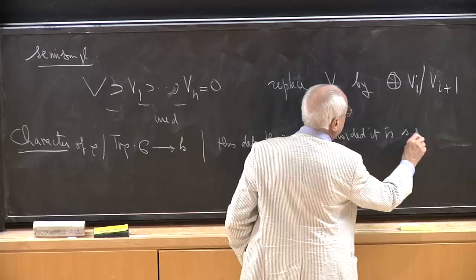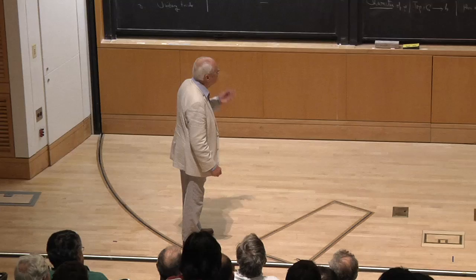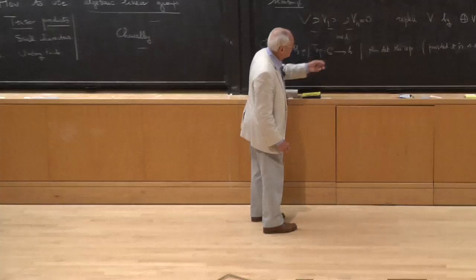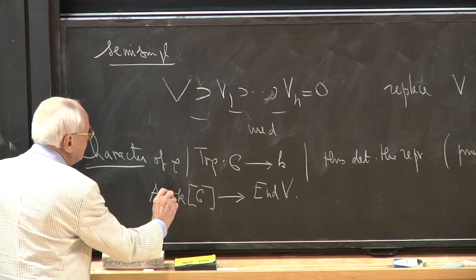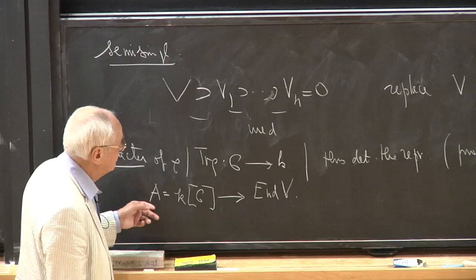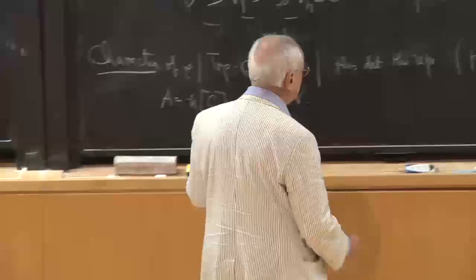This is a bit surprising at first because when you learn group representations you usually assume G to be finite and use orthogonality properties of characters. But this is much more elementary — it's not really a theorem on groups. Such a representation gives you a map from K[G] to endomorphisms of V, and the trace makes sense. The theorem is a theorem on algebras: any algebra, not necessarily finite dimensional, with a finite-dimensional representation is determined by its trace provided it's semi-simple. You should forget about the group.